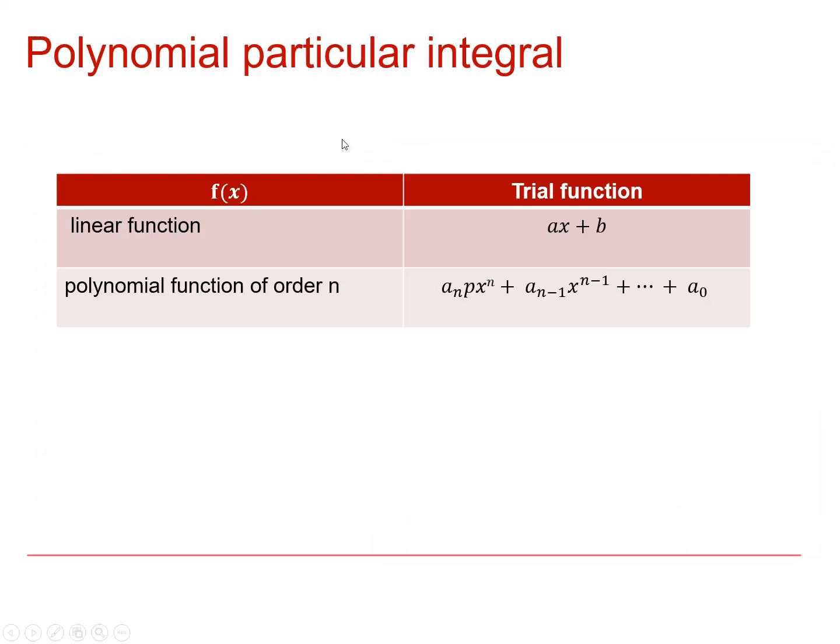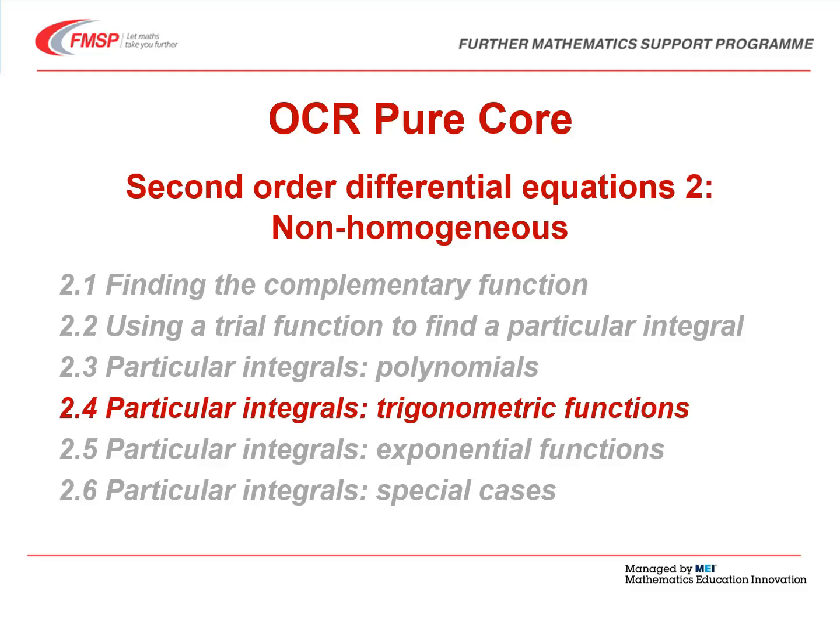So to summarize what we found out so far: if the right-hand side, the f(x) in our differential equation, is a linear function, we try ax plus b as our function. And if it's a polynomial, although we've only looked at a quadratic, it does actually work for polynomials. If it's a polynomial, we'll try a polynomial of the same order. The next video in this sequence is 2.4, particular integrals with trigonometric functions.